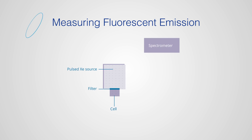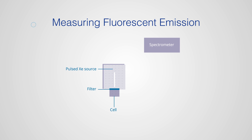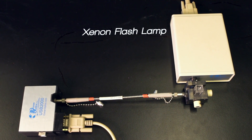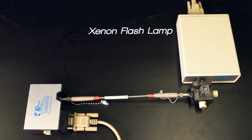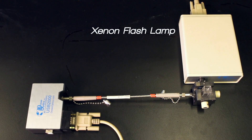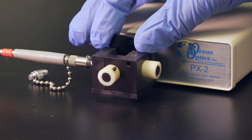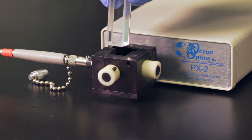When measuring fluorescence emission, a different instrumental setup is used. In this configuration, the emitted light is collected and measured perpendicular to its original direction, to reduce the amount of scattered light being detected. The light source is a xenon flash lamp that pulses on and off, and a signal is only collected when the lamp is on. The light beam passes through a bandpass filter and into the cell.